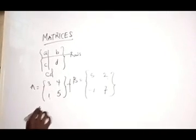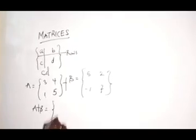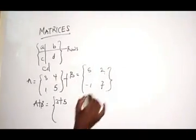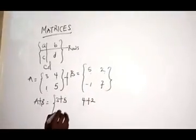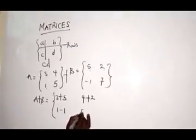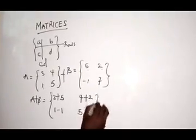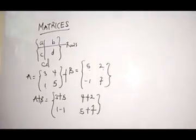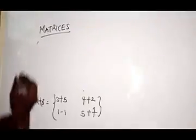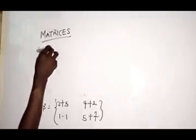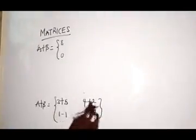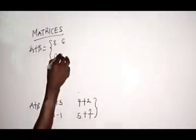Your A plus B will be: 3 plus 5, then 4 plus 2, then 1 plus (minus 1) — so plus and minus gives minus 1 — then 5 plus 7. So your A plus B will now be 8, 6, 1 minus 1 is 0, 4 plus 2 is 6, and 5 plus 7 is 12.